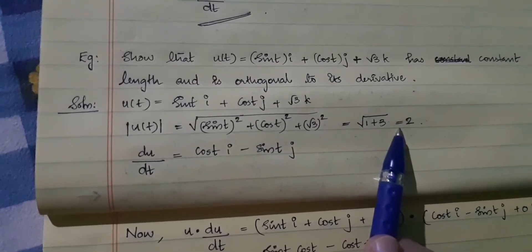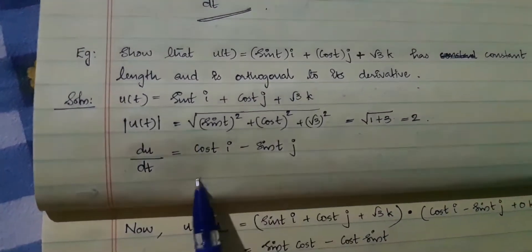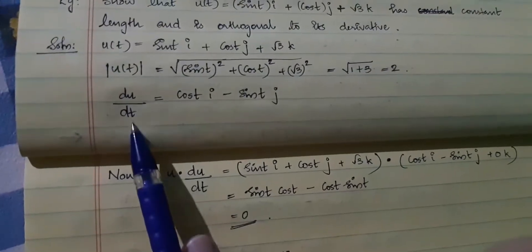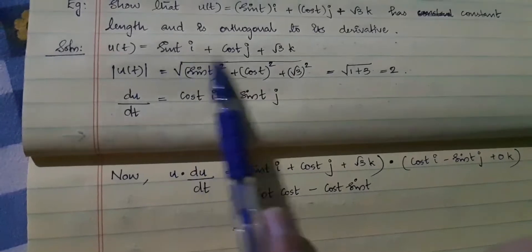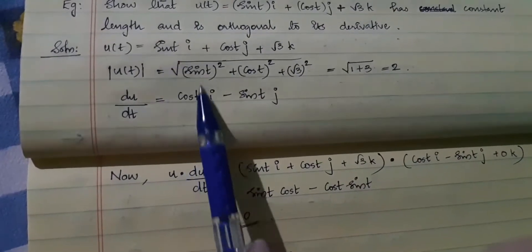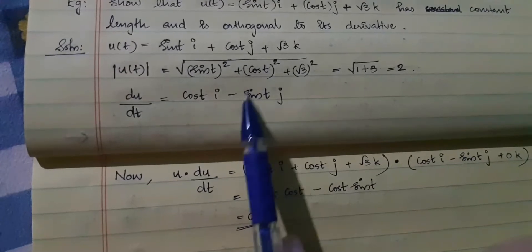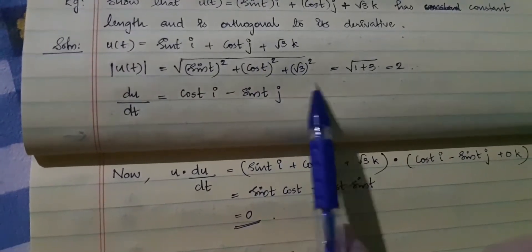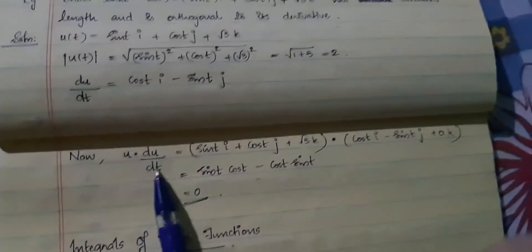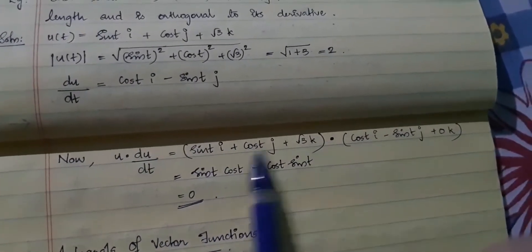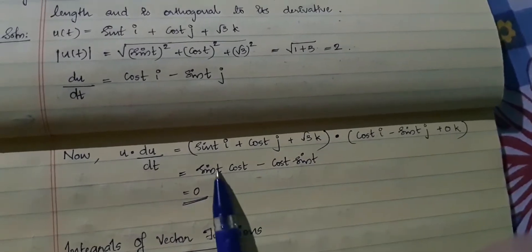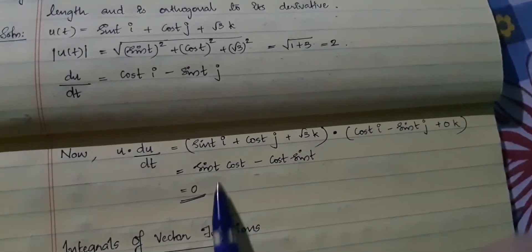Now we know that if it is of constant length it is orthogonal to its derivative. Since the question says 'show', we cannot just use the result. So we are finding du/dt, the derivative of this. The derivative of sin(t) is cos(t)i, the derivative of cos(t) is −sin(t)j, and since √3 is a constant its derivative is 0. We find u dot du/dt: sin(t)·cos(t) minus cos(t)·sin(t) plus √3·0, which equals 0, since multiplication is commutative.